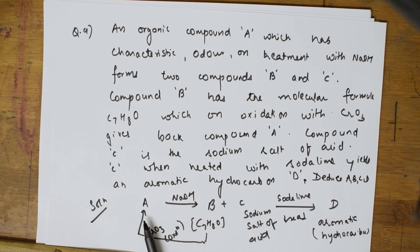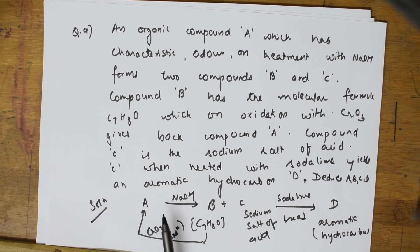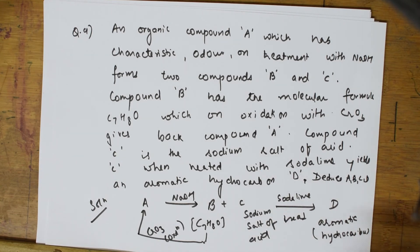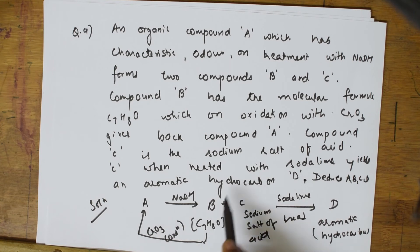So compound A is an aldehyde — specifically one that does not have an alpha hydrogen. Cannizzaro's reaction is shown only by aldehydes without alpha hydrogen. That is the key clue. Also, C treated with soda lime gives an aromatic hydrocarbon, so C must be the sodium salt of an aromatic carboxylic acid.